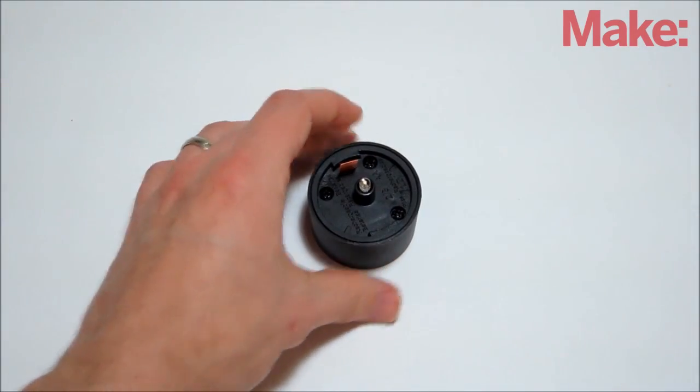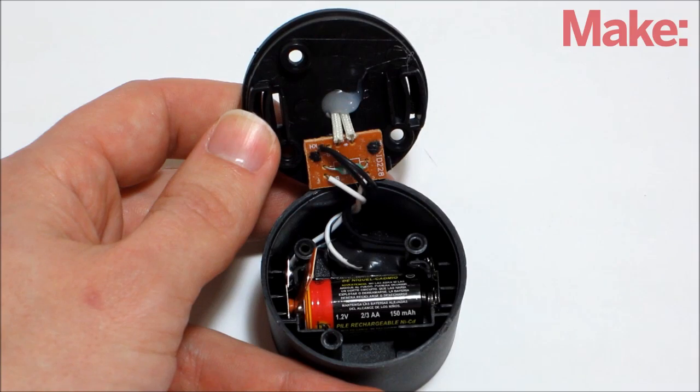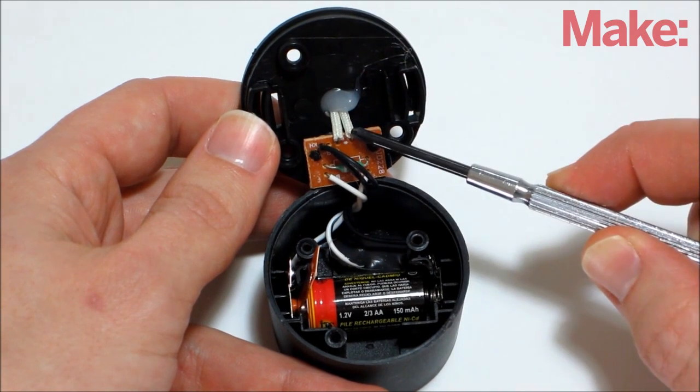Start by removing the base from the path light. Then open up the housing and check out the circuitry. We're going to modify this by adding a motion switch to the LED.